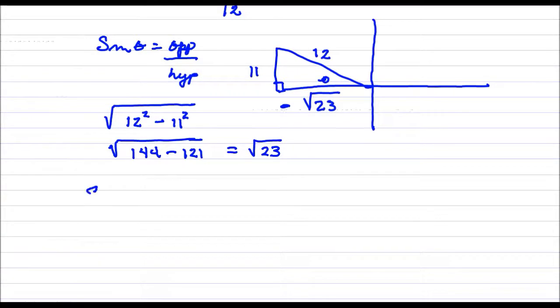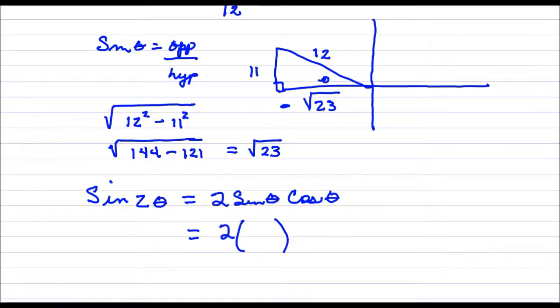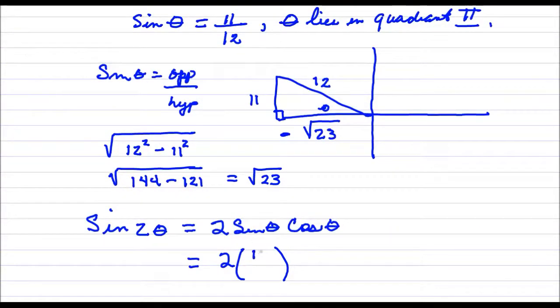Now let us go ahead and find the sine of 2 times that angle. It is 2 times sine theta times cosine theta. So 2 times sine theta, well, that was given. It was 11 over 12 times the cosine of that angle. So cosine is the adjacent over the hypotenuse. That was negative square root of 23 divided by the hypotenuse. And then we just need to multiply this out and simplify it.